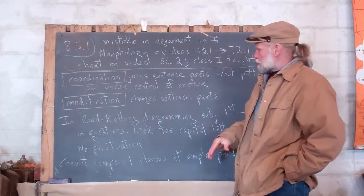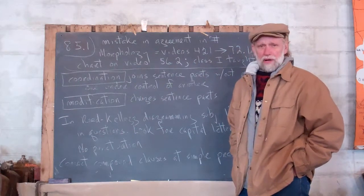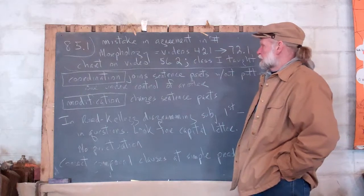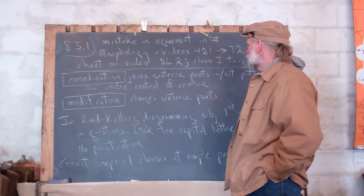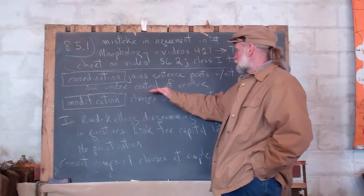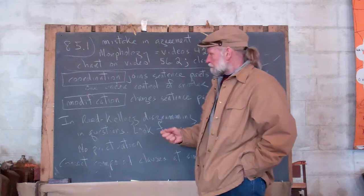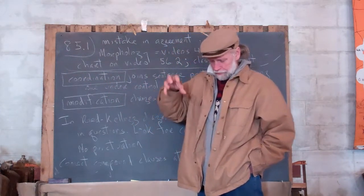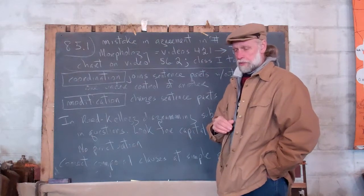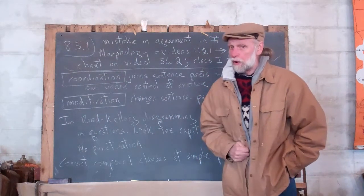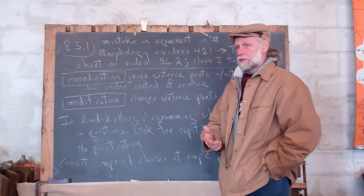Now, dealing with what I taught yesterday — coordination. Coordination is one of those seven processes that go on in constructing sentences. It joins sentence parts — maybe subjects, maybe predicates, maybe clauses — without putting one sentence part under the control of another. It is co-ordination: 'co' is Latin for 'together.' They are equal. On that chart you will see coordinating conjunctions: and, or, but, sometimes for. That's about all of them — there aren't very many. I have begun to show you coordination being used in sentences.